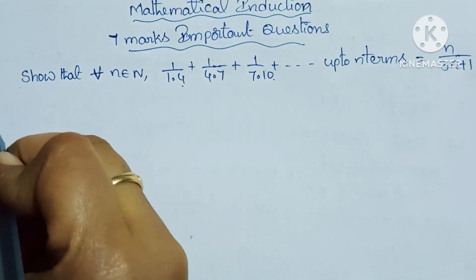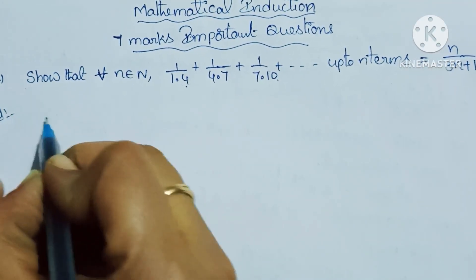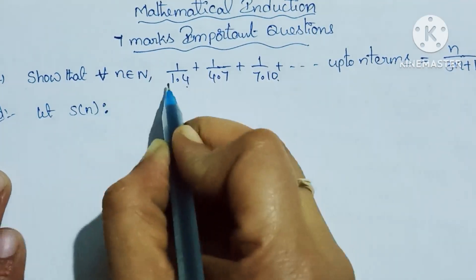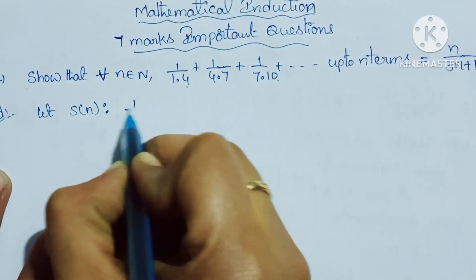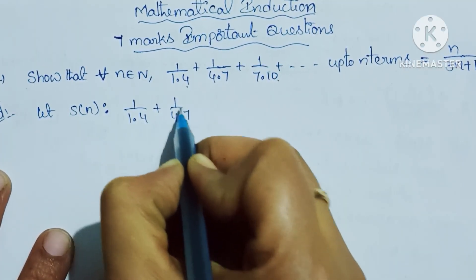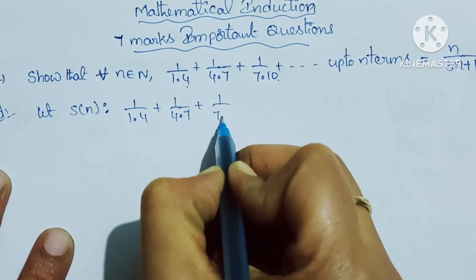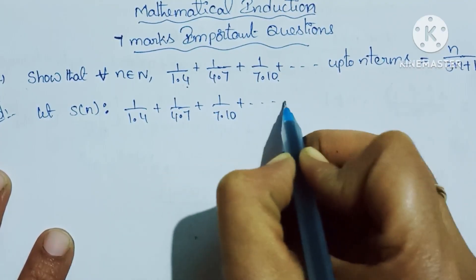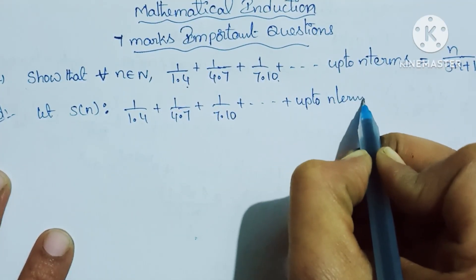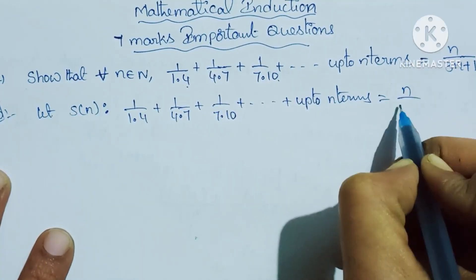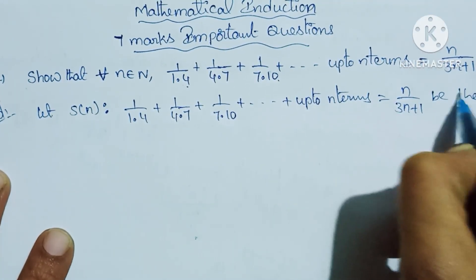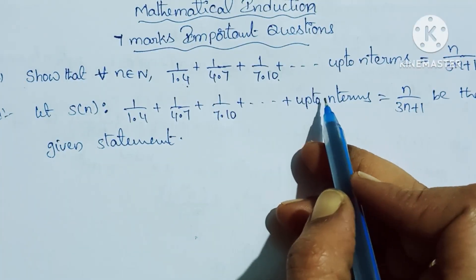Let S(n) be the given statement: 1/(1×4) + 1/(4×7) + 1/(7×10) + ... up to n terms equals n/(3n+1). This is the statement S(n) that we need to prove.